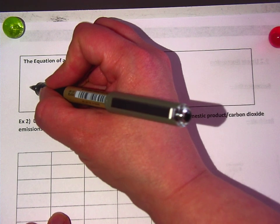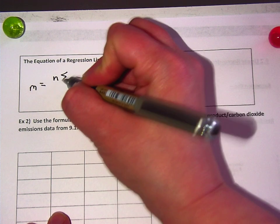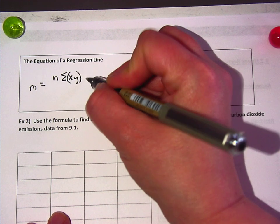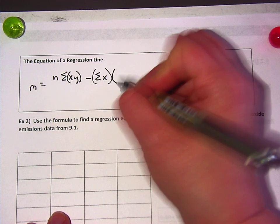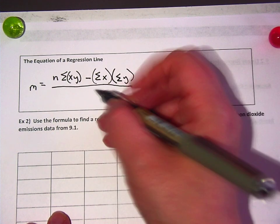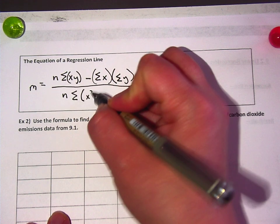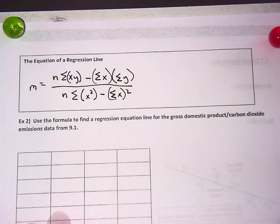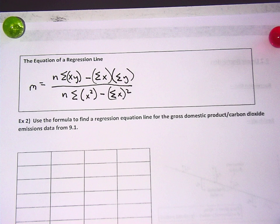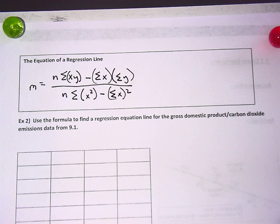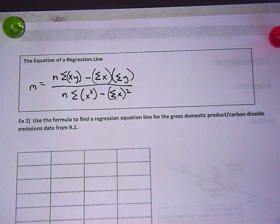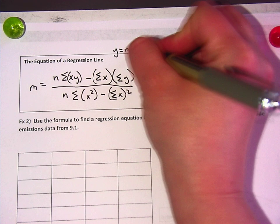All right. So, first of all, in your y equals mx plus b, m is equal to n times the summation of xy minus the summation of x times the summation of y over n times the summation of x squared minus the summation of x squared. This is very similar to the correlation coefficient equation, except for there's no square root on the bottom. I didn't forget that. And this is like y equals mx plus b. So, that's how you find m.